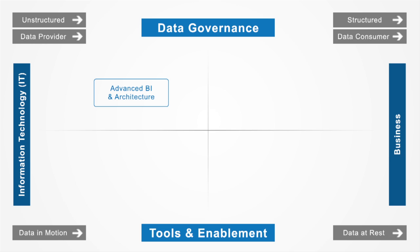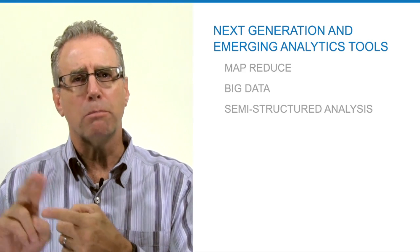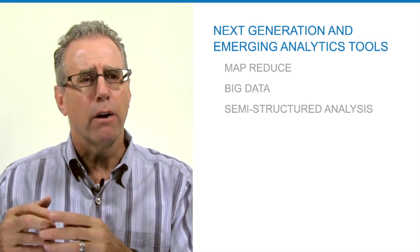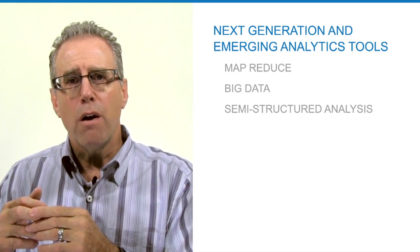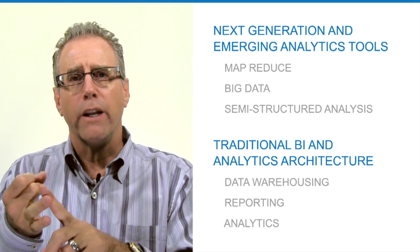There are a number of big data governance challenges that come from the model we've introduced, and we're going to highlight four. The first is advanced BI and analytics architecture. When we talk about this, we're really talking about the integration and harmonization of next-generation and emerging analytics tools like MapReduce, big data, and semi-structured analysis tools, and combining them with your traditional BI reporting and analytics architecture — your data warehousing, reporting, and analytics.